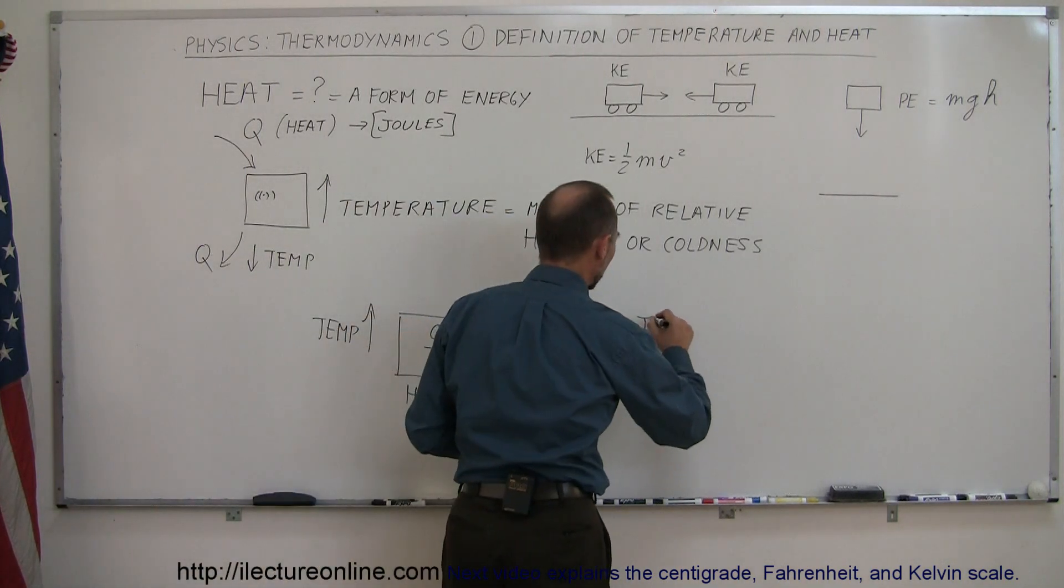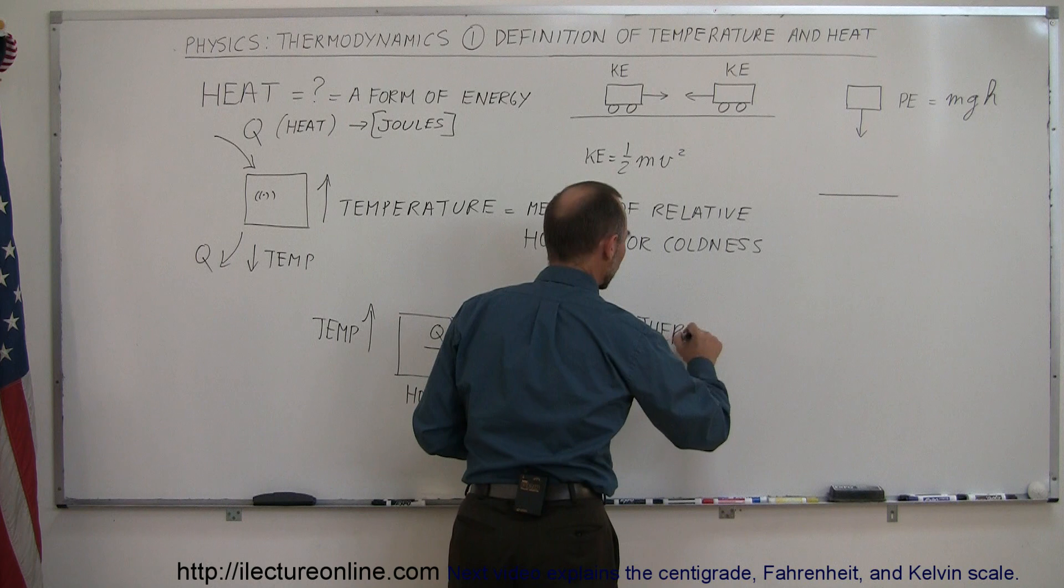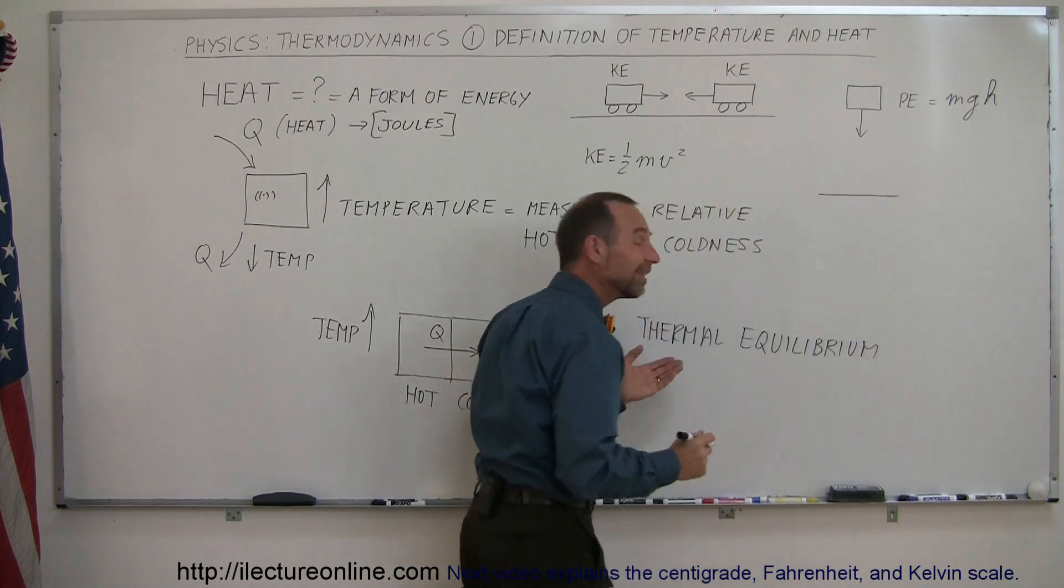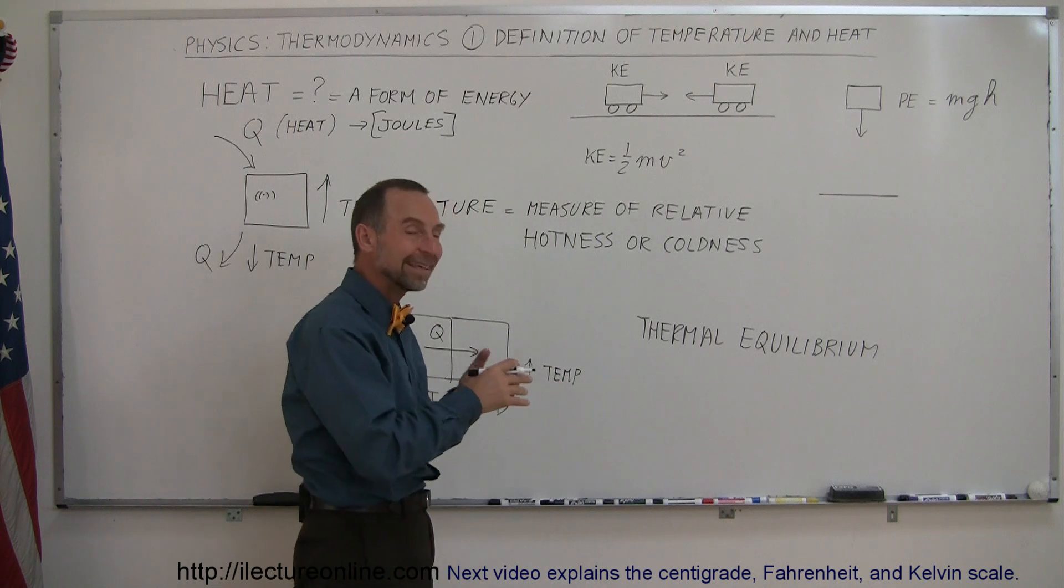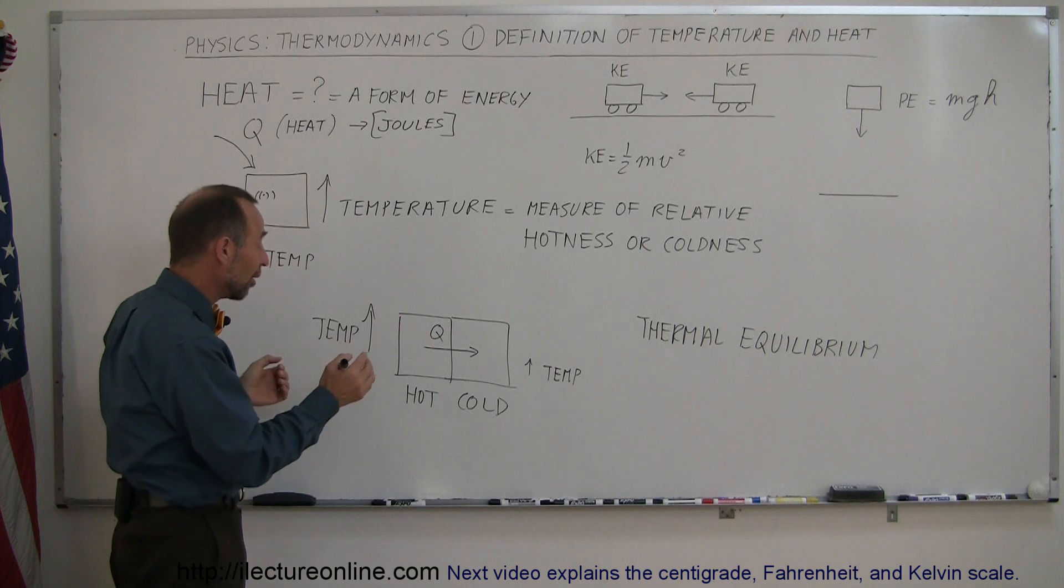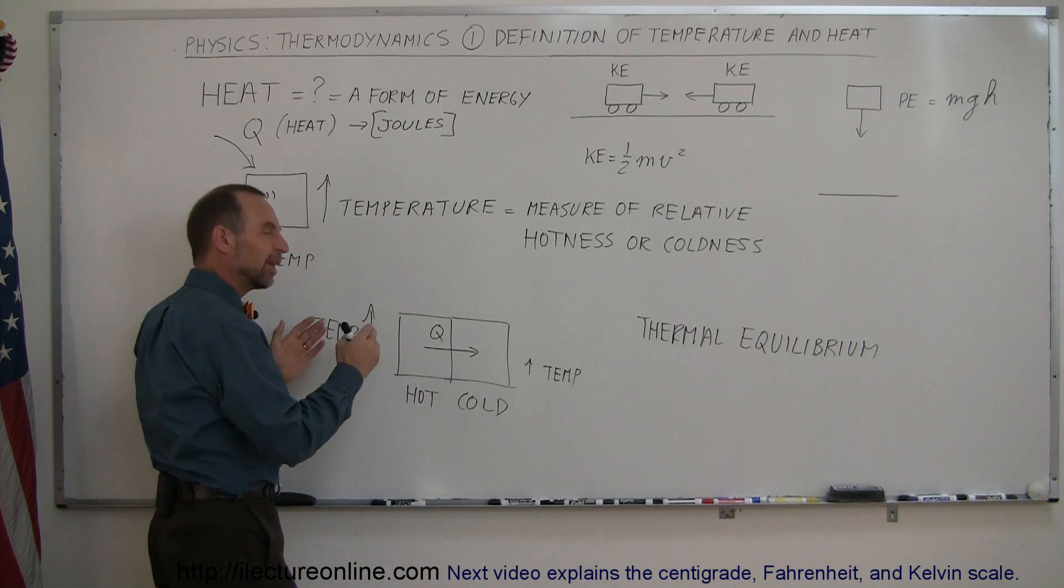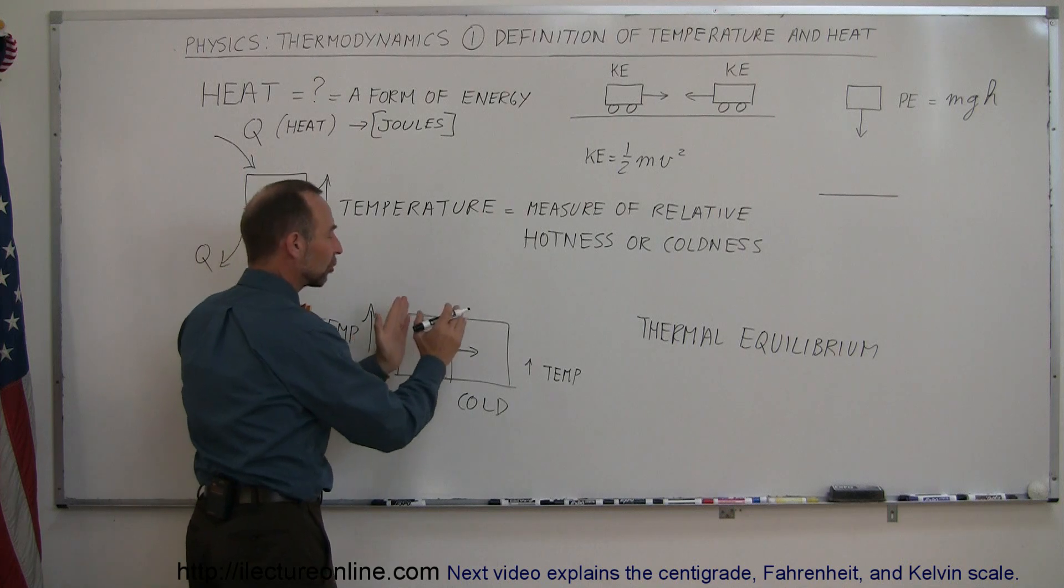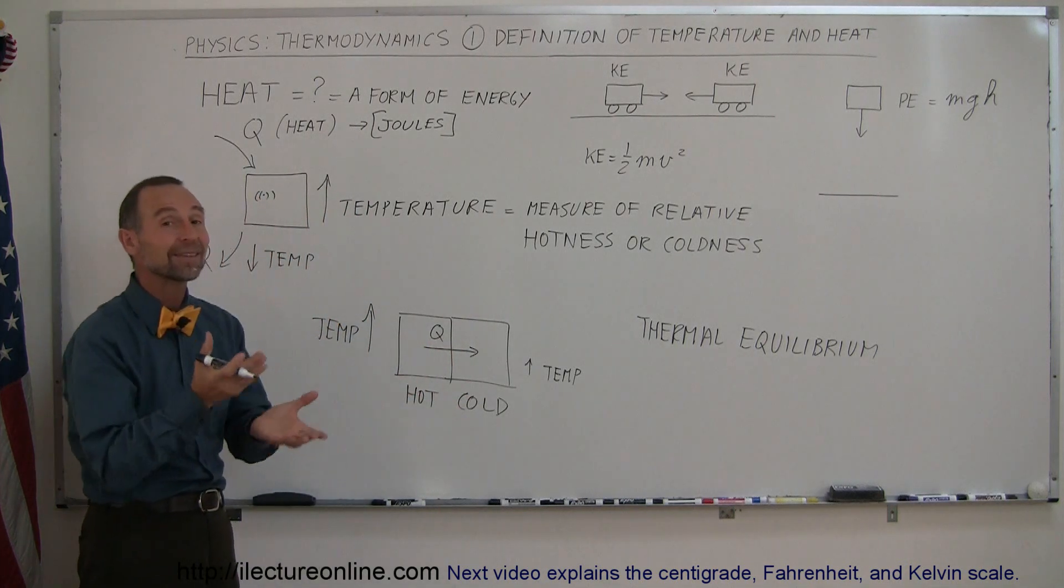So let's throw that one in there just for good measure. Thermal equilibrium. Remember, thermal means heat. So it means heat equilibrium. And thermal equilibrium or heat equilibrium is reached when sufficient amount of heat has moved from the hot object to the cold object to cause them to be at the same temperature.